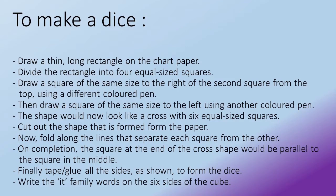Okay, so shall we see how to do the dice? First, you need to draw a thin long rectangle on the chart paper. Divide the rectangle into four equal-sized squares. Draw a square of the same size to the right of the second square from the top using a different colored pen.